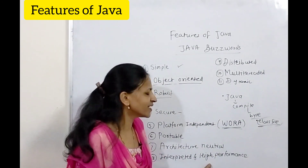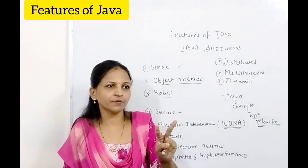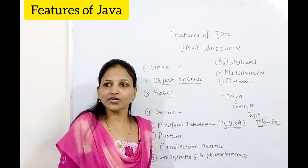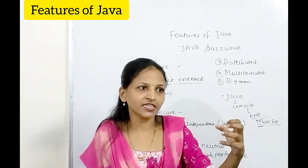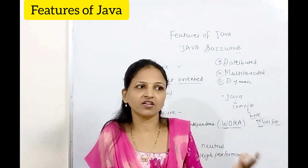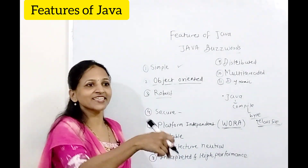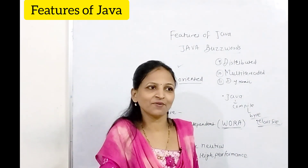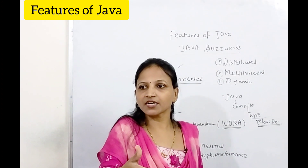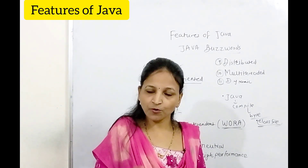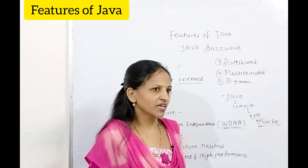The next feature is interpreter and high performance. Two points: first, the Java Virtual Machine interpreter runs your program. Second, high performance — Java can use a just-in-time compiler. Because of the just-in-time compiler, Java programs run fast compared to other interpreted languages. That's why Java gives high performance.